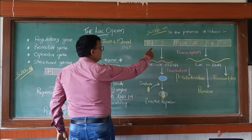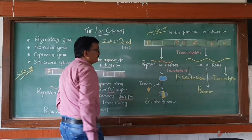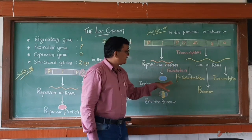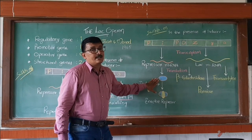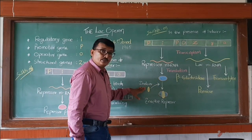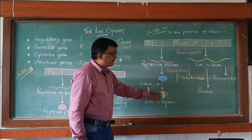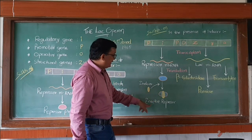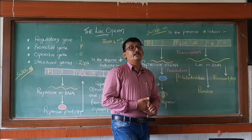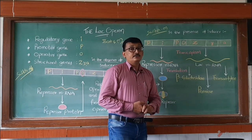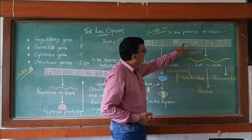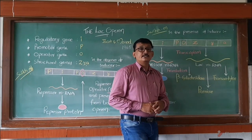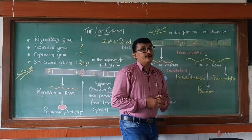Now let us take the second condition: when we add lactose to the medium where bacteria is growing. The regulatory gene undergoes transcription and forms repressor mRNA, which undergoes translation to form repressor protein. However, the inducer — lactose — enters and binds with this repressor, making it an inactive repressor. Now that repressor is not able to bind the operator region, so the operator region is free.